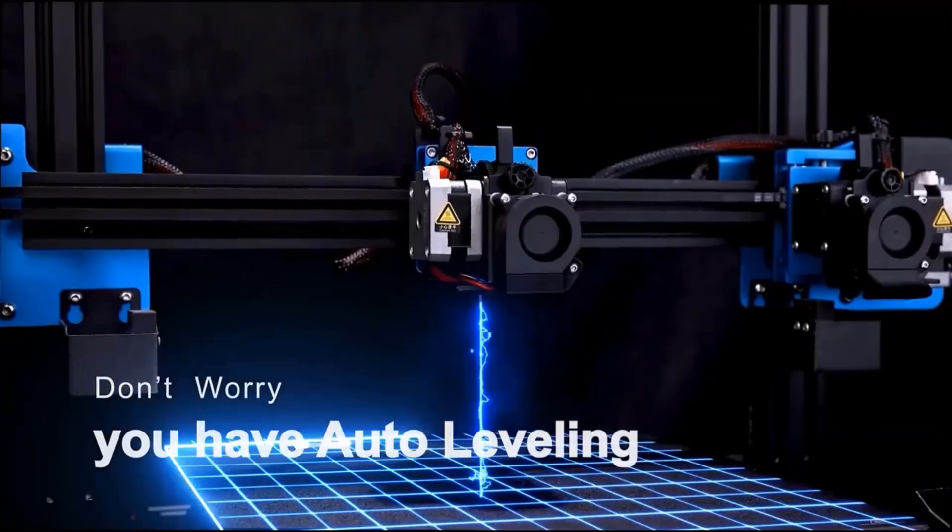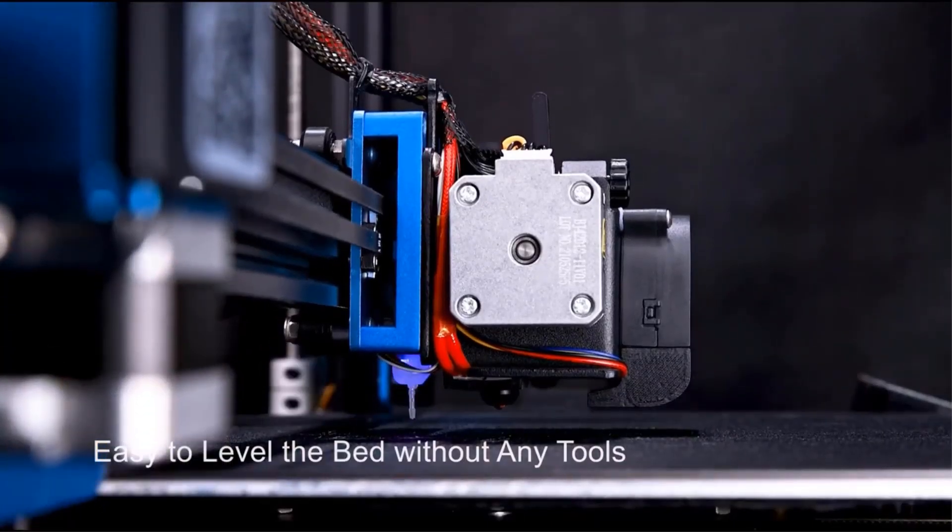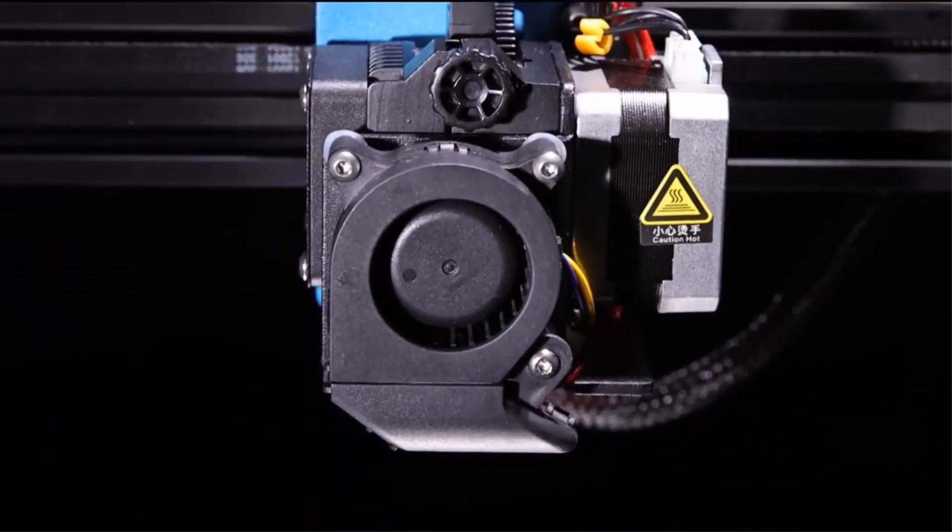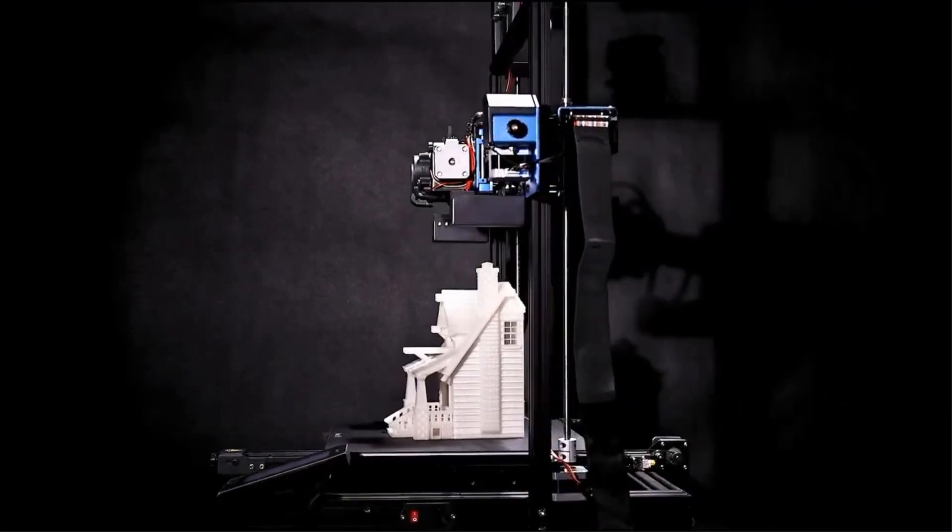The SV04 features an IDEX independent dual extruder system, which ensures precise and efficient printing. Each extruder can operate independently, reducing the risk of filament interference and allowing for greater design flexibility.